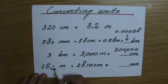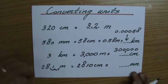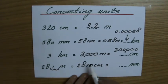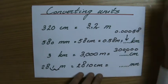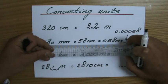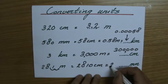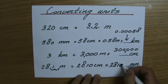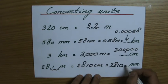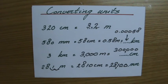So we have 2810 centimeters. Now go to millimeters — there are ten millimeters in one centimeter, so multiply by 10. Two thousand eight hundred and ten times ten gives twenty-eight thousand one hundred millimeters.